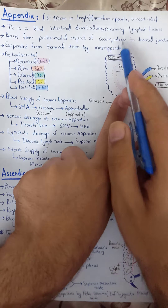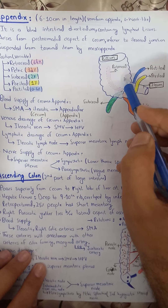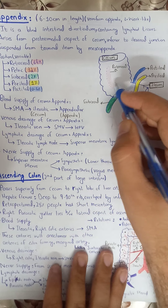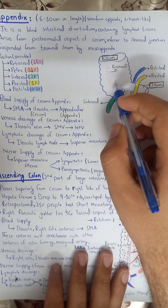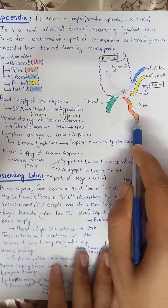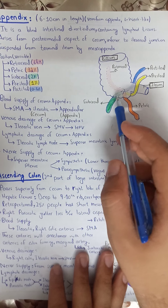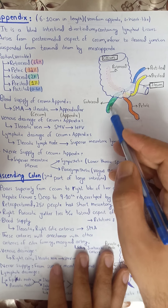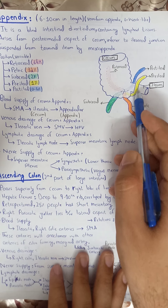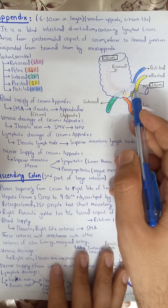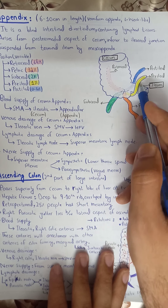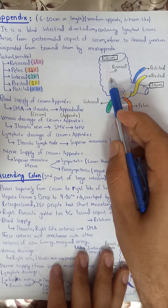The appendix arises from the posterior medial aspect of the cecum, inferior to the ileocecal junction. Positions: retrocecal is 64% at the 11 o'clock position; pelvic — descending into the pelvis — is 32% at the 5 o'clock position; subsecal is approximately 6 o'clock at 2%; pre-ileal is 1%; and post-ileal is 0.5%, with positions described as clock positions in different books.